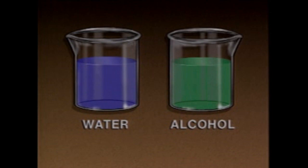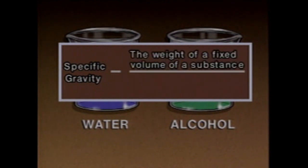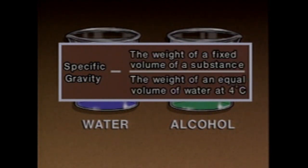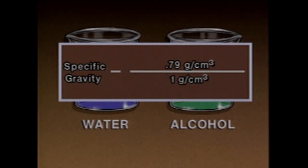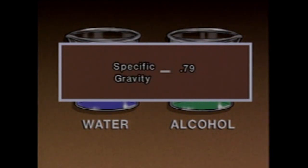The densities of different substances can be compared in terms of their specific gravities. Specific gravity is the ratio of the weight of a fixed volume of a substance to the weight of an equal volume of water at a standard temperature of four degrees Celsius, the temperature at which water is most dense. For example, the specific gravity of alcohol can be determined by dividing its density, 0.79 grams per cubic centimeter, by the density of an equal volume of water, one gram per cubic centimeter. When the division is done, the units of measurement cancel out, leaving a specific gravity value of 0.79, meaning alcohol is 0.79 times as dense as water.